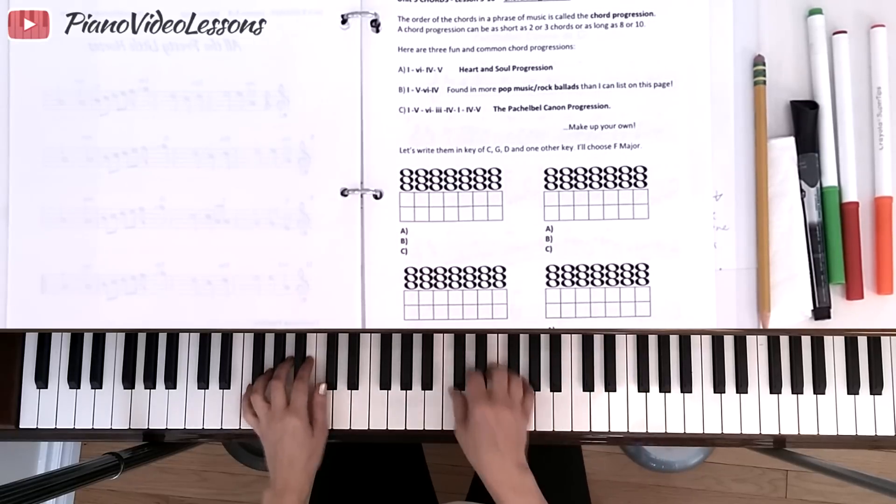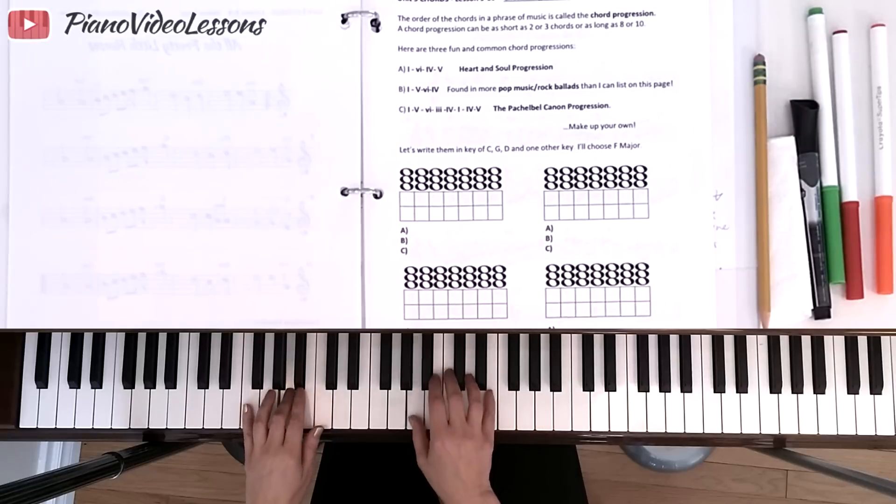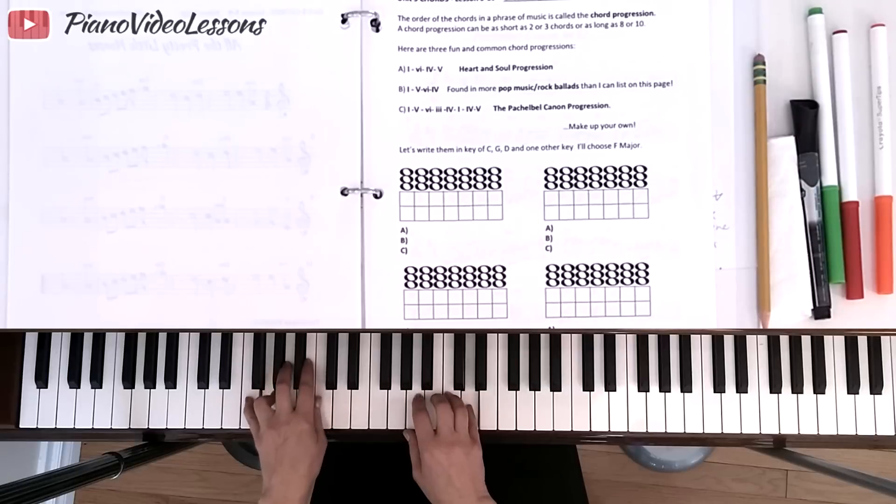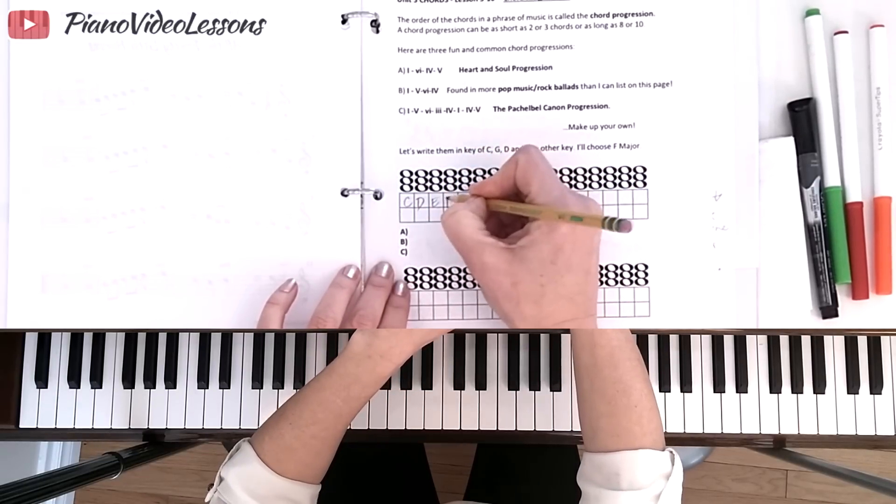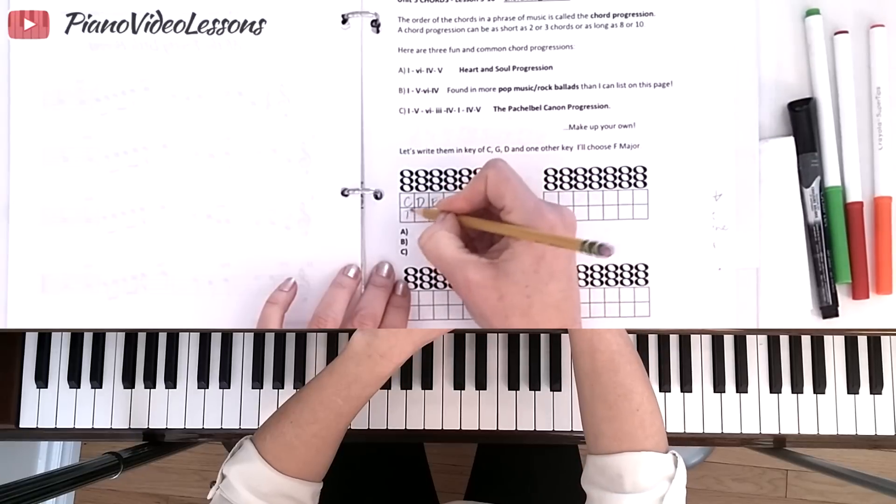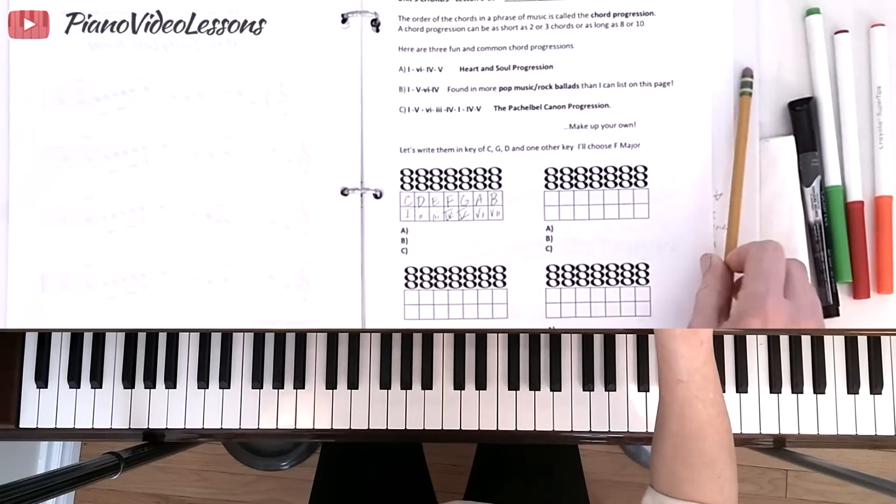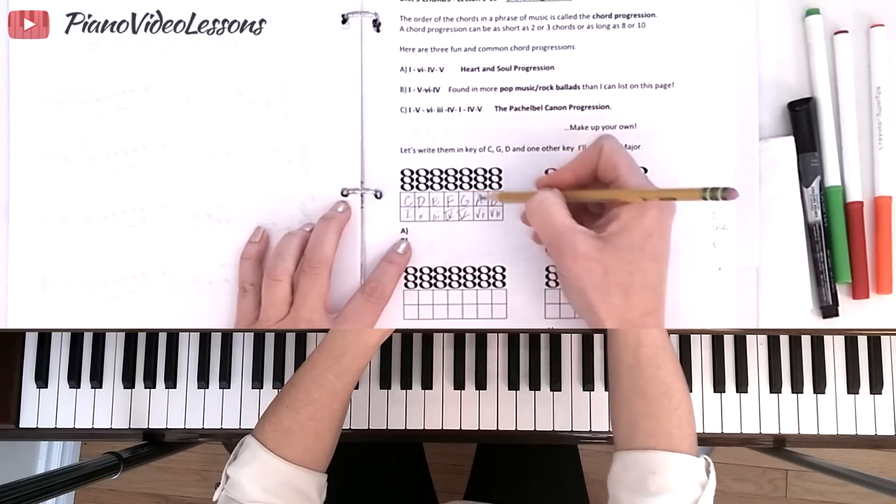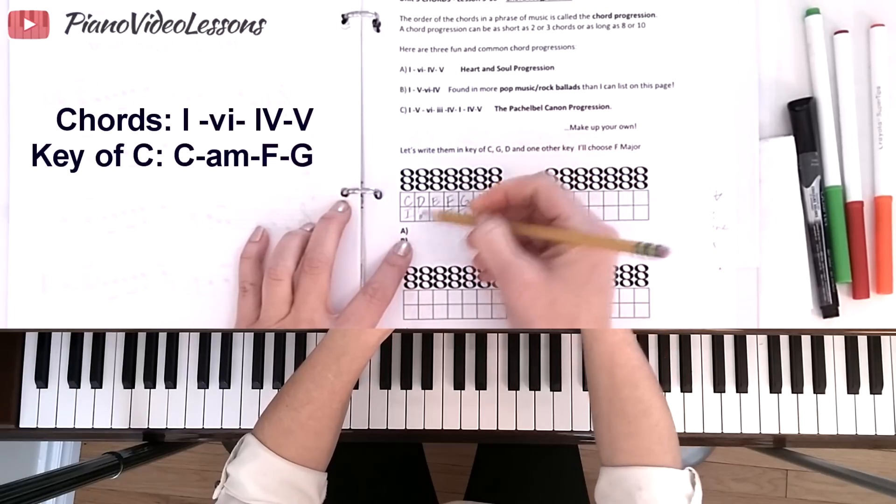Chord progressions is a fancy name for chords that are played in a set order and then repeated. Here's a common chord progression that maybe many of you have heard or tried. This is the 1-6-4-5 chord progression, and many of you will call this Heart and Soul. If we played in the key of C major, we're just going to use the chords from the key of C, and we've got 1, 2, 3, 4, 5, 6, and 7.